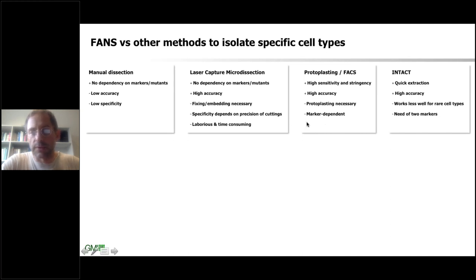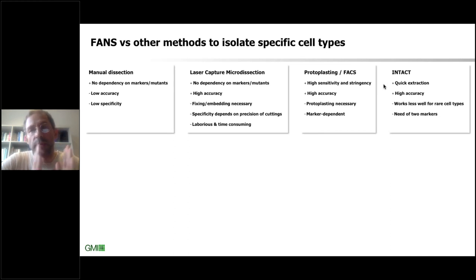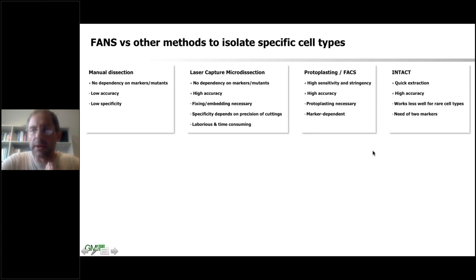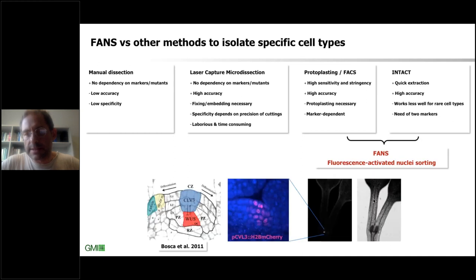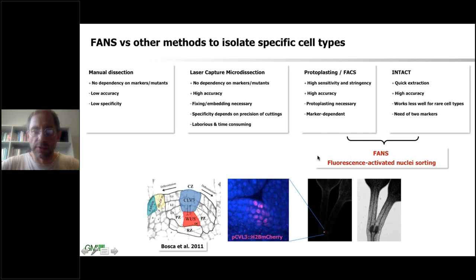Another method is INTACT — basically a method to affinity-tag nuclei. In principle you could also tag other things like ribosomes. Of course, if you are interested in chromatin, you need nuclei. However, as a biochemical method it can lead to problems if your cells of interest are a very small amount compared to the rest. So we really wanted to combine the ease of nuclear isolation with the high accuracy and stringency of fluorescent activated sorting — doing this fluorescent activated nuclear sorting.